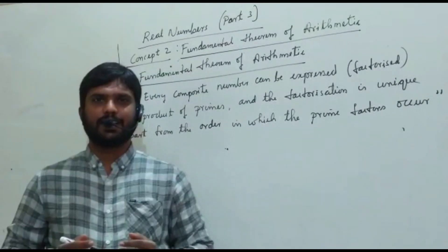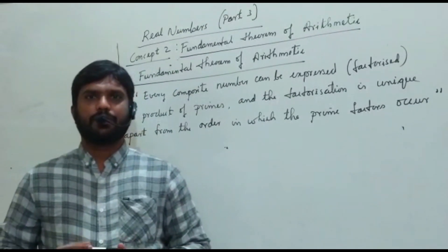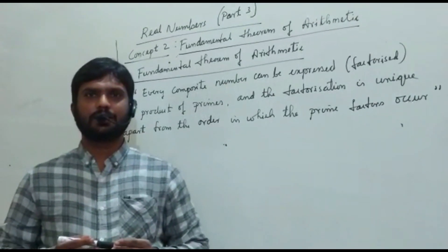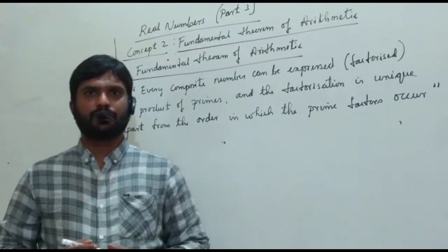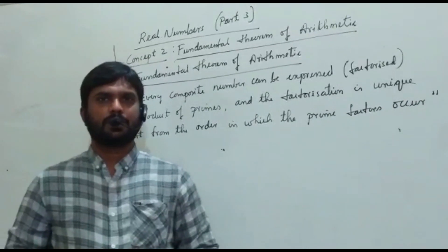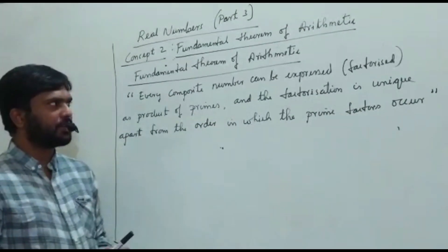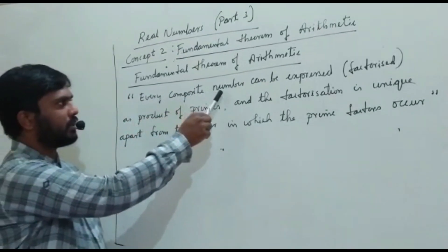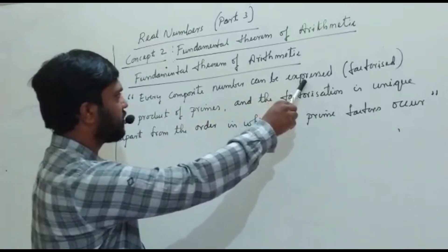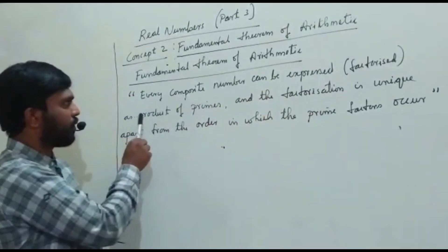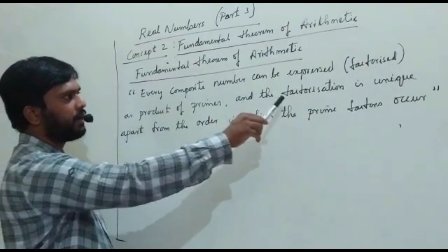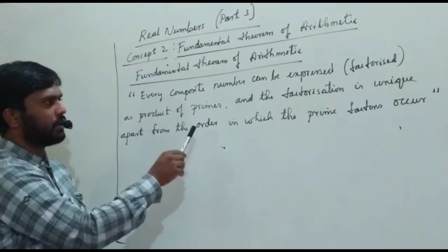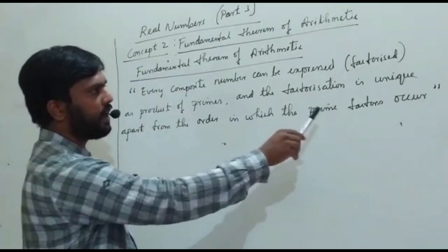Hello students! In this session, we will be learning the next concept of real numbers, that is fundamental theorem of arithmetic. The statement of fundamental theorem of arithmetic is: every composite number can be expressed as product of primes, and the factorization is unique apart from the order in which the prime factors occur.